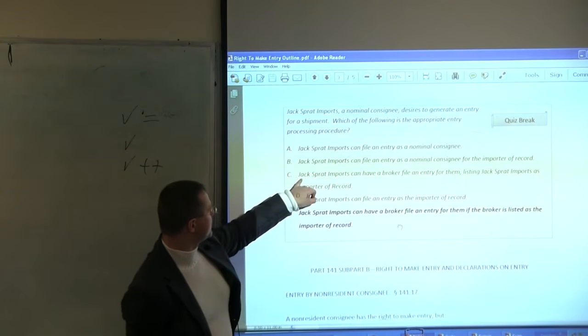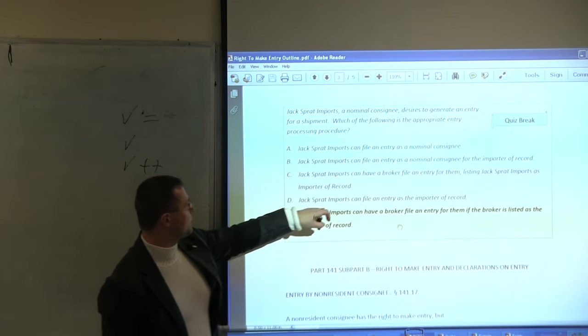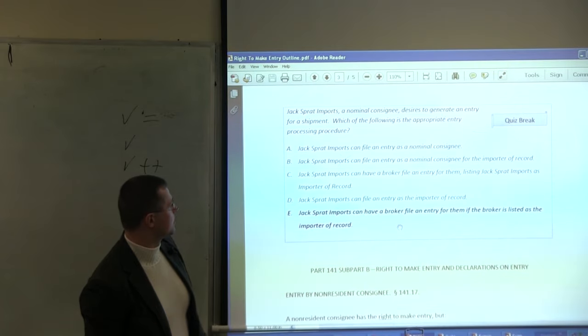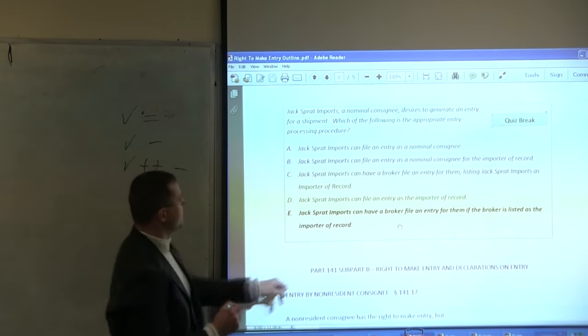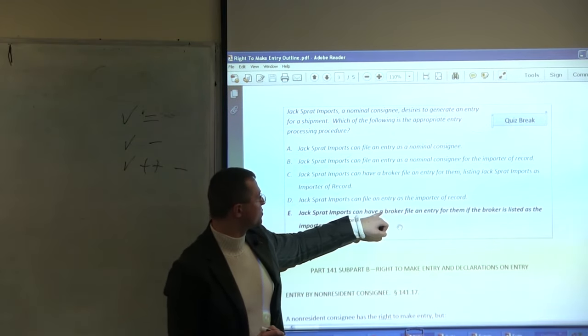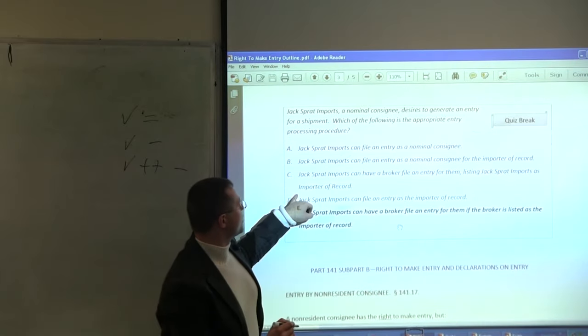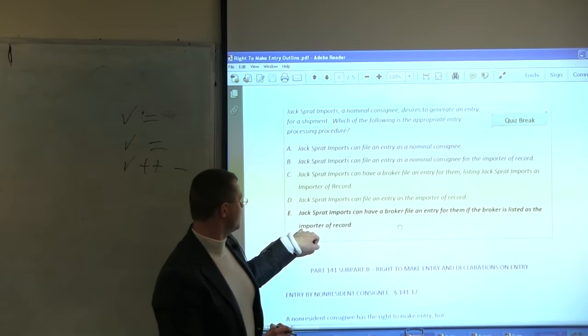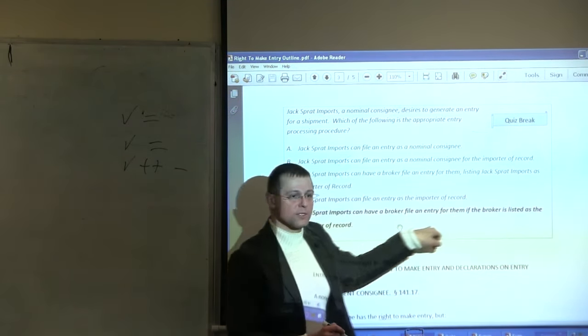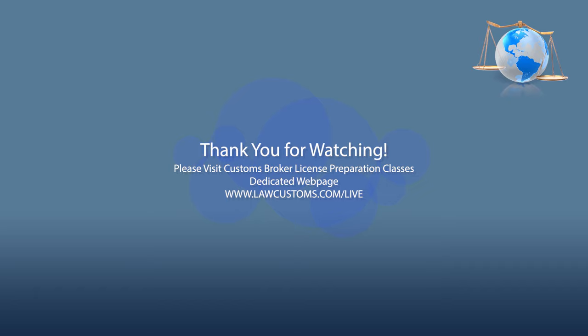Here, in C for example, I will have several minuses. One minus is this one, so this is a minus. Here, a broker, a broker, a broker, we do not know if it's authorized broker. Listing Jack Sprat input as importer of record, that's minus. You know, that's not a minus. You cannot have that. You can have this. You can have broker as importer of record.